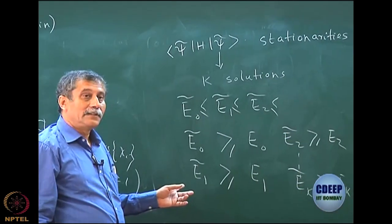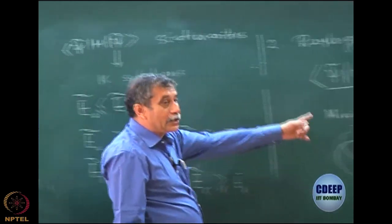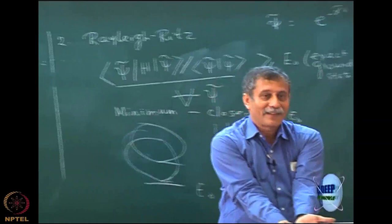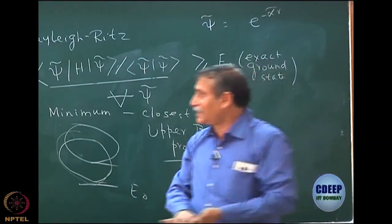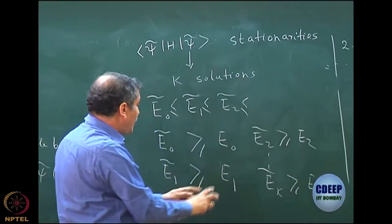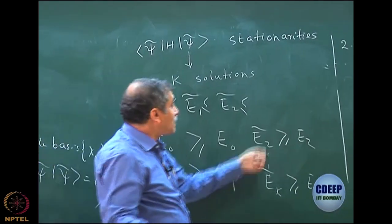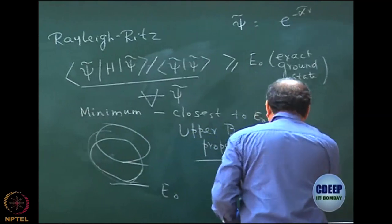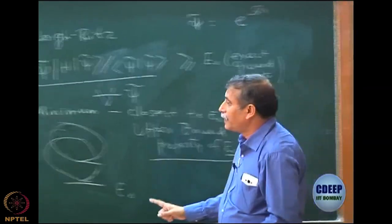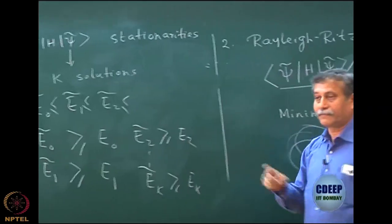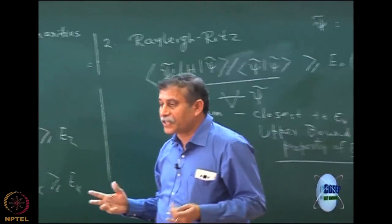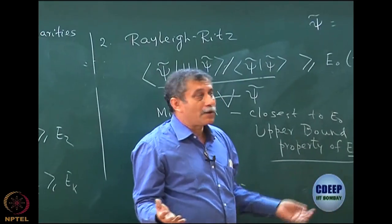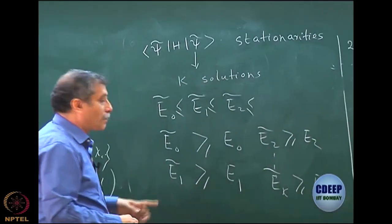This is remarkable because now we are not just talking about being greater than or equal to E_0. Of course, if something is greater than or equal to E_1 or E_2 or E_k, it must be greater than E_0 — that is needless to say. But now we are saying that the second solution must be so much greater that it must be greater than the first excited state. The third one must be greater than E_2. This is remarkable because for the first time, this bound for E_0 can now be extended to say I have an upper bound property for each of E_0, E_1, E_2, E_3 — because many times in chemistry, we are interested in excited states.